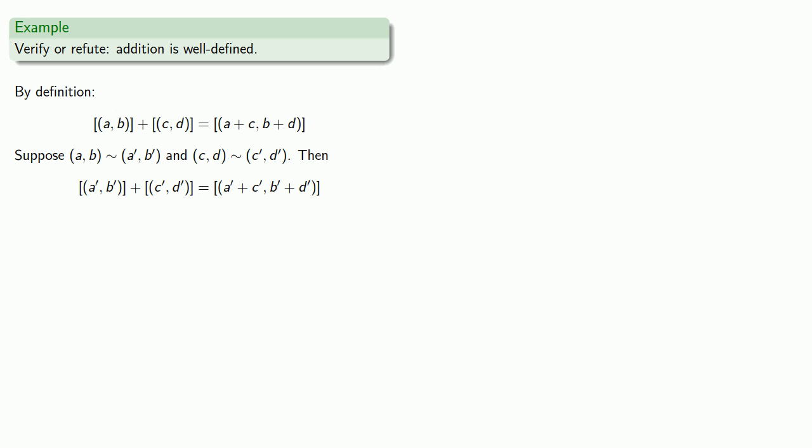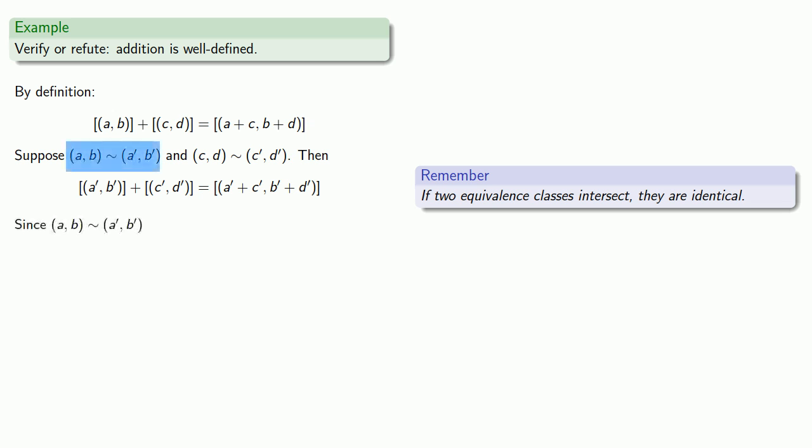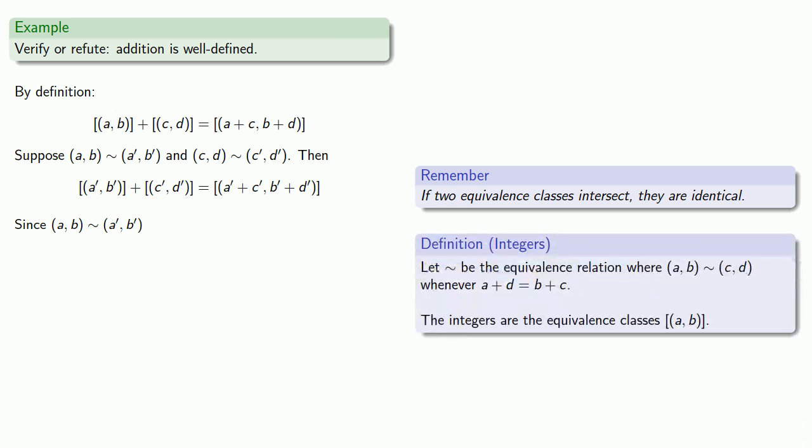So it's useful to remember that if two equivalence classes intersect, they are identical. So we know that AB is equivalent to A'B'. Definitions are the whole of mathematics. All else is commentary. Our definition of that equivalence tells us. And similarly, since CD is equivalent to C'D', we know. Now everything in sight is a natural number and we've proven, or should have proven, all the properties of the natural numbers. So we can add. There's a lot of different ways we could list the sum. So let's get an idea of our destination. We want to show that the two equivalence classes are equal.